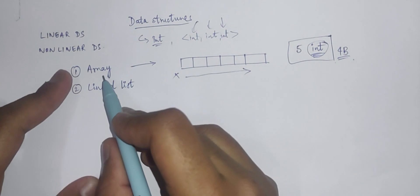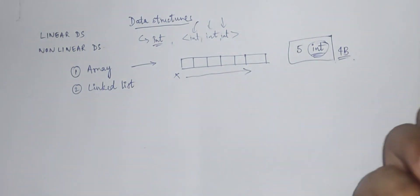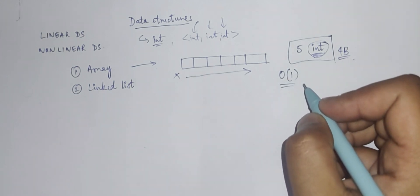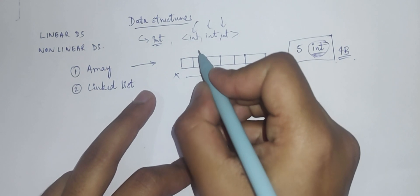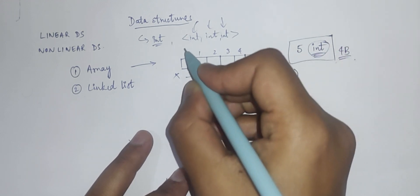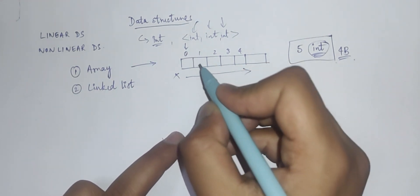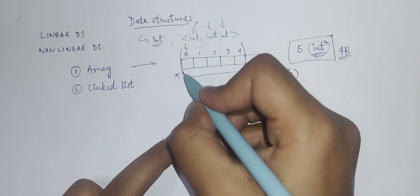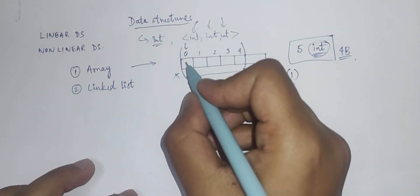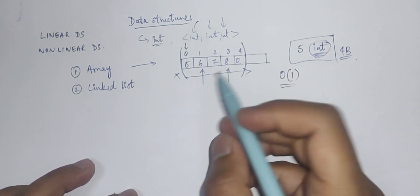The advantage of an array is that you can access any item in constant time. We'll discuss notation in upcoming videos, but if you want to access any element in this array, you depend on the index. All indices start with zero, so for an array of five elements, index four would be the last index. If you want to access any of these elements it will take the same constant amount of time.